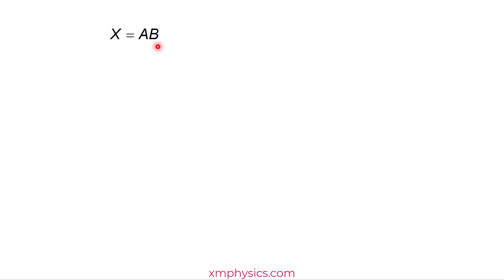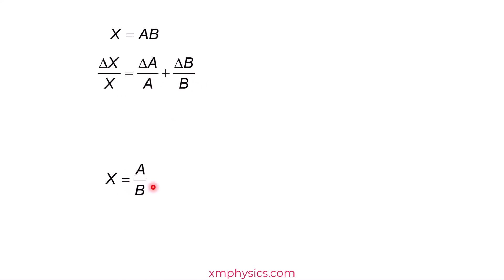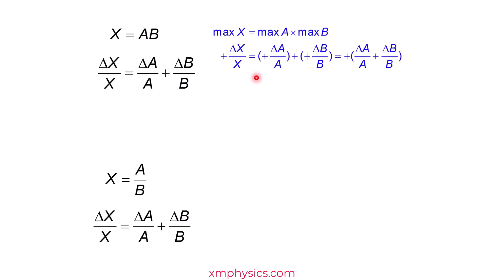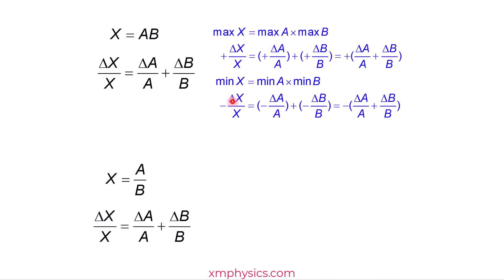What if we are doing X equals A times B? If you have watched my previous video, then you know that now we should be working with fractional uncertainties. So delta X over X is delta A over A plus delta B over B. What if we are doing X equals A divided by B? Then delta X over X is still equal to delta A over A plus delta B over B. So it doesn't matter whether you are multiplying or dividing. If you are doing X equals A times B, maximum X happens when both A and B are at their maximum, and minimum X occurs when both A and B are at their minimum.